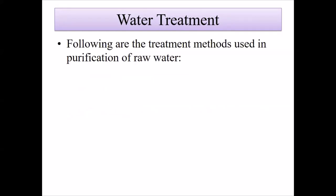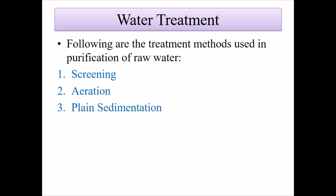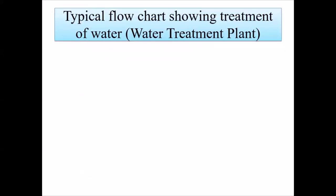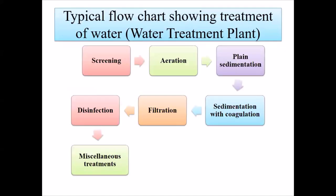The following are the methods for purification of raw water: screening, aeration, plain sedimentation, sedimentation with coagulation, filtration, disinfection, and advanced methods of water treatment. This is a typical flow chart of a water treatment plant (WTP).